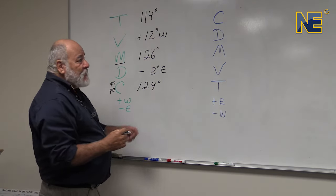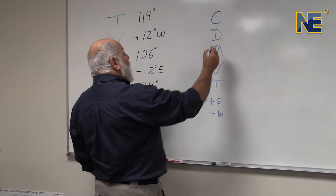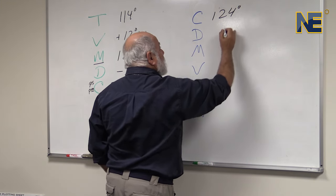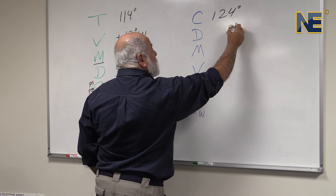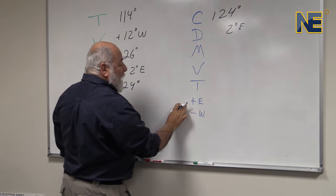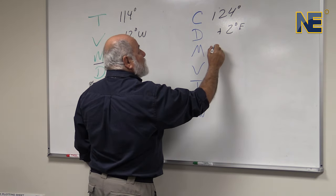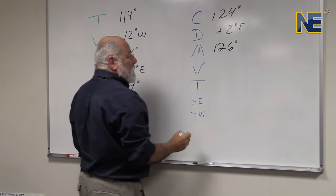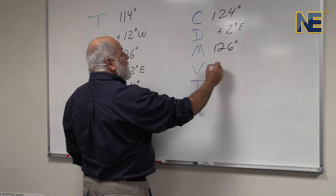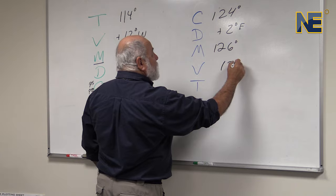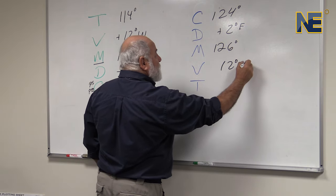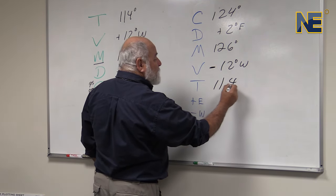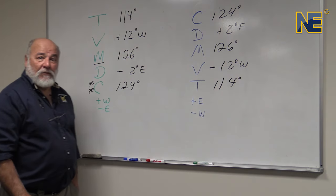If we did it in the opposite direction — if we had a compass course of 124 degrees and our deviation is 2 degrees east — we know we're going to add east, which gives us 126 degrees magnetic. Our variation for the area is 12 degrees west, so we subtract that 12, giving us a true course of 114 degrees.